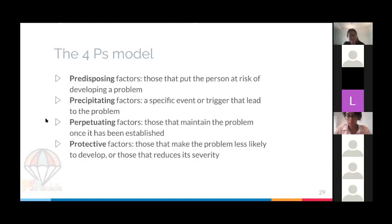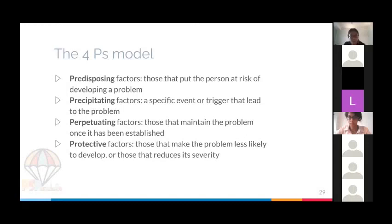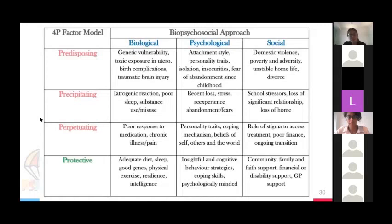The Four P's model: Predisposing factors are those that put a person at risk of developing a problem. Precipitating factors are specific events that directly trigger the problem. Perpetuating factors maintain the problem — they keep it there rather than letting the person get better quickly. Protective factors are the positive ones — things that protect the person from developing the problem or from getting worse.